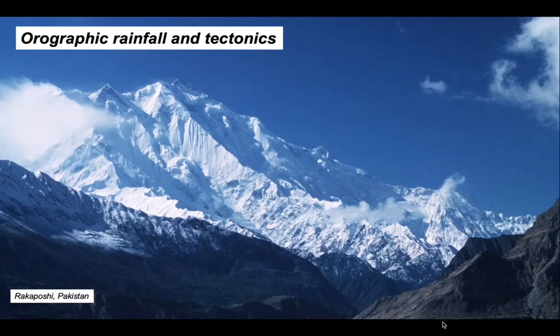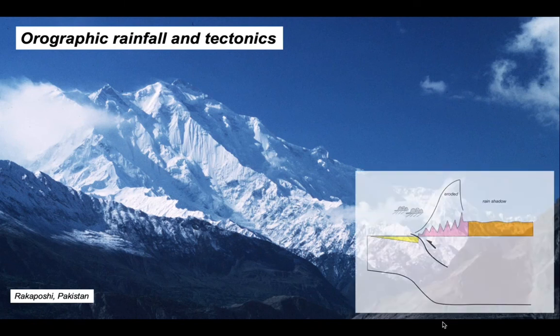So remarkably then, it's where the rain falls that is dictating the mountain ranges — in the Himalayas versus Tibet, and in the Southern Alps of New Zealand. Maybe next time you're in the mountains and complaining about the bad weather, reflect a while and remember that maybe those mountains are there because of the rainfall itself.